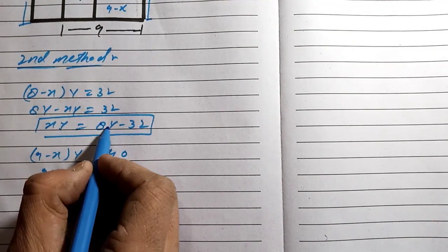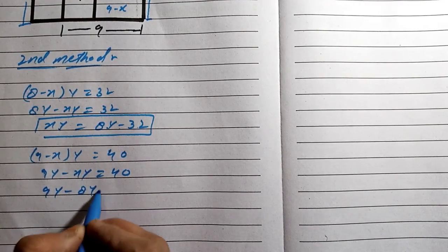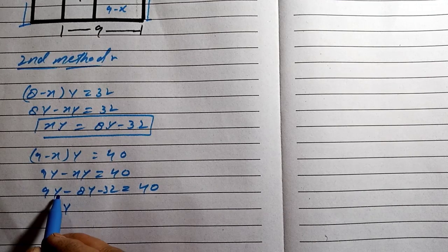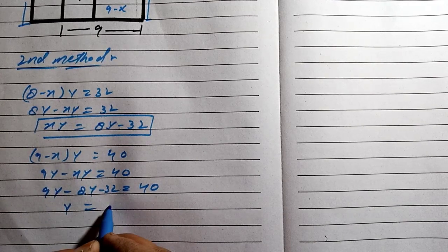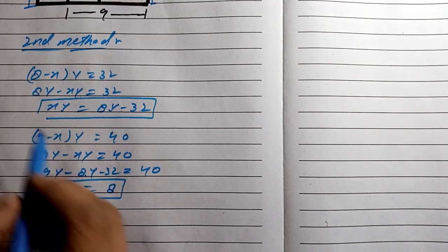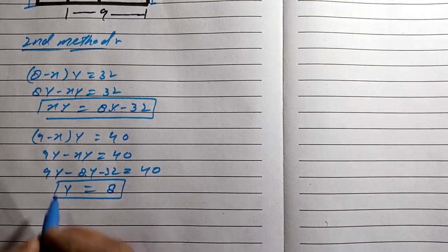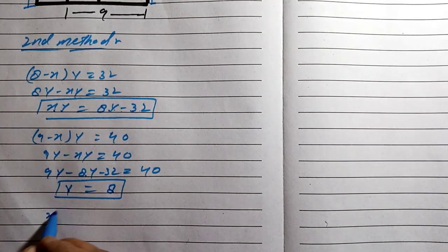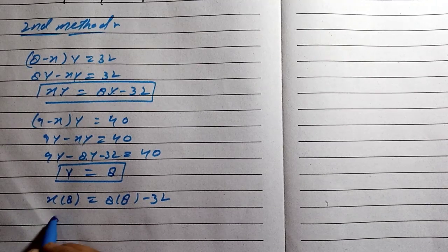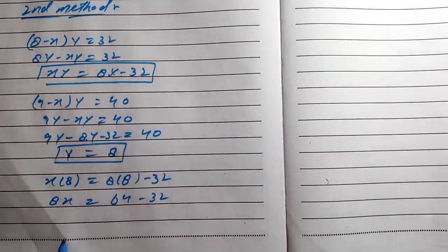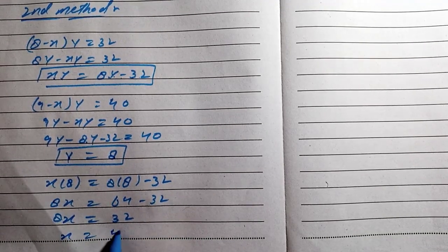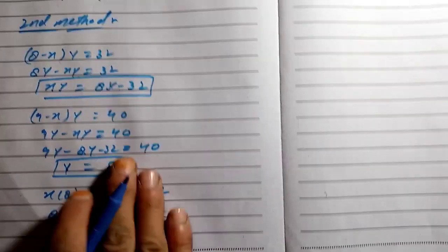We substitute the value of xy equals 8y minus 32 into the equation: 9y minus (8y minus 32) equals 40. So 9y minus 8y plus 32 equals 40, giving y equals 8. Now substituting y equals 8 into xy equals 8y minus 32: 8x equals 64 minus 32, so 8x equals 32, and x equals 4.